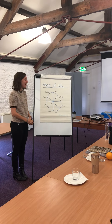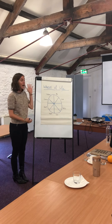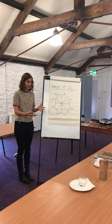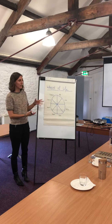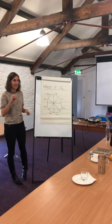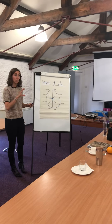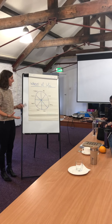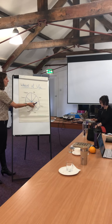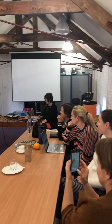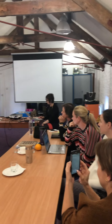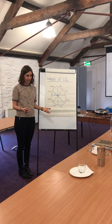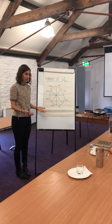Hello everybody, thank you for being here today. We're going to talk about how to create your own Wheel of Life. The objective is getting a snapshot of where you are in your life across the most important areas — eight of them. You do this by drawing a circle and dividing it into eight triangles, then selecting what the key areas are for you.